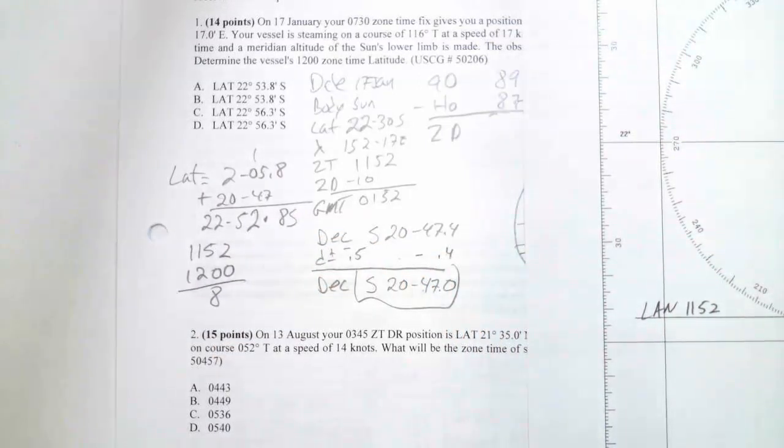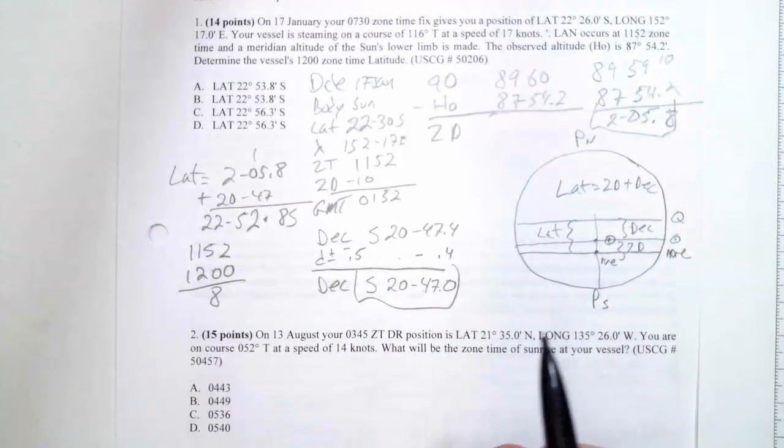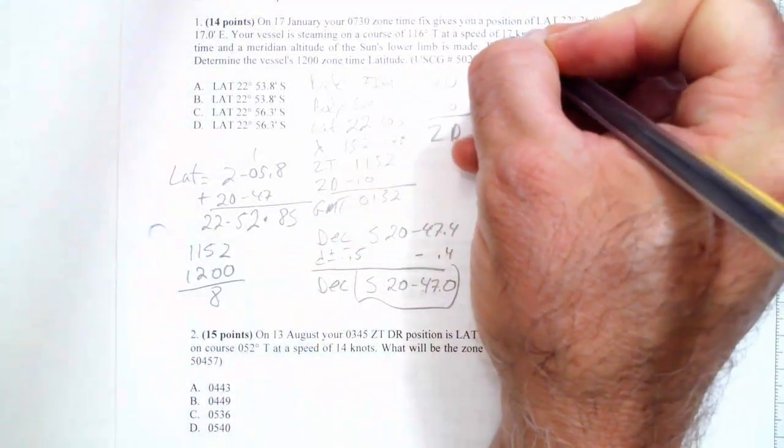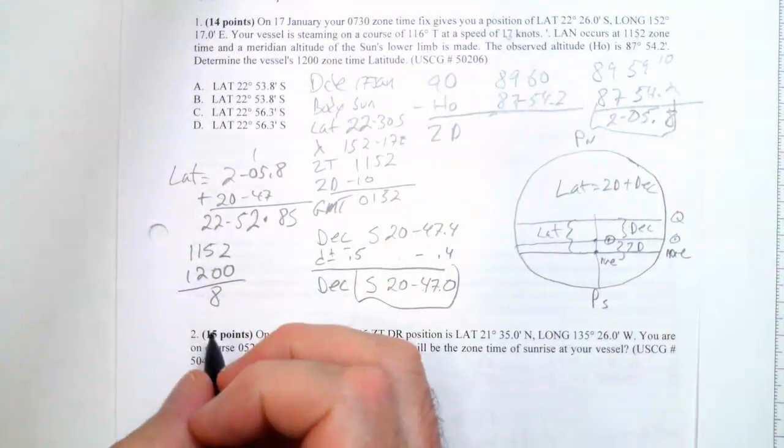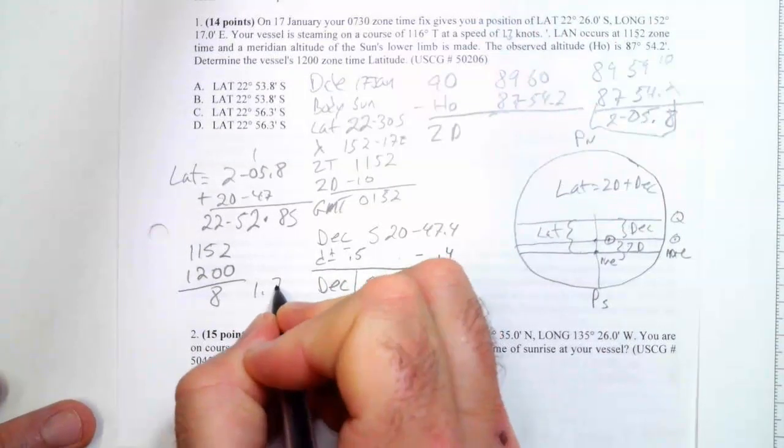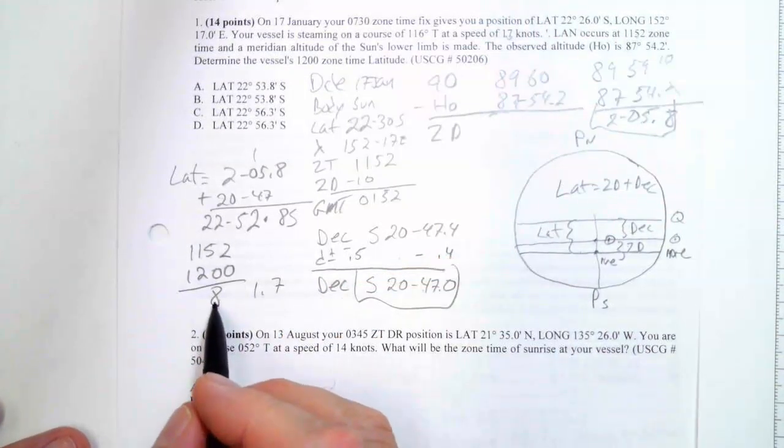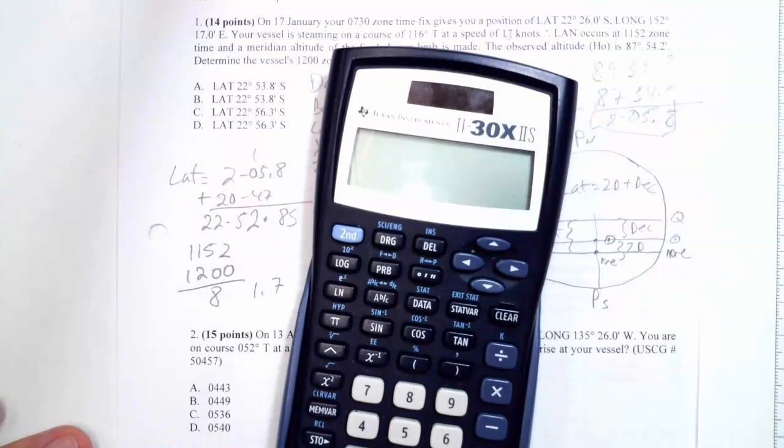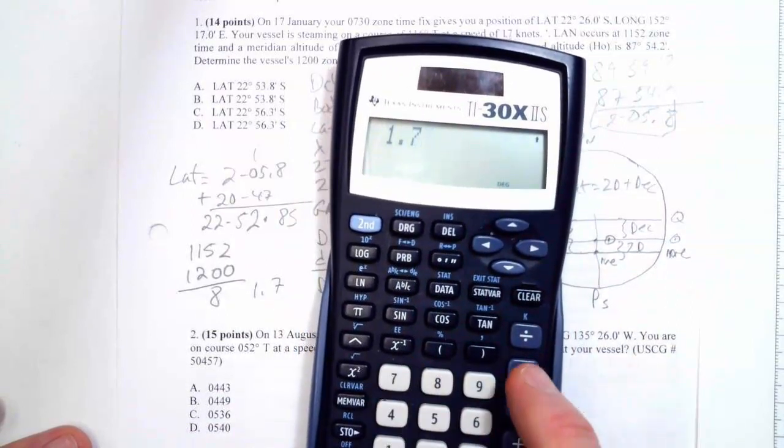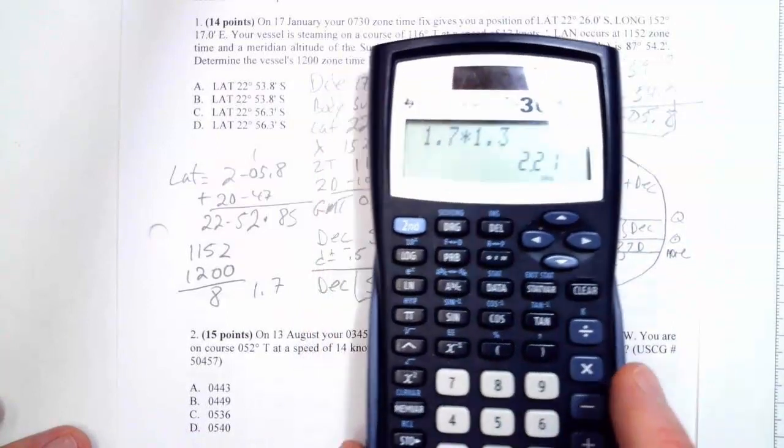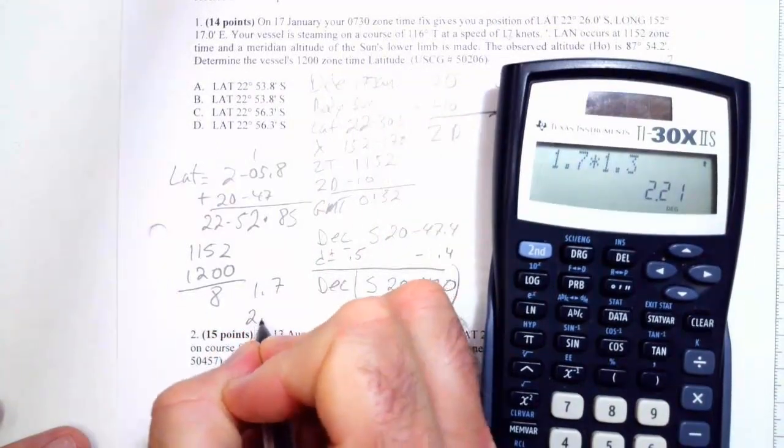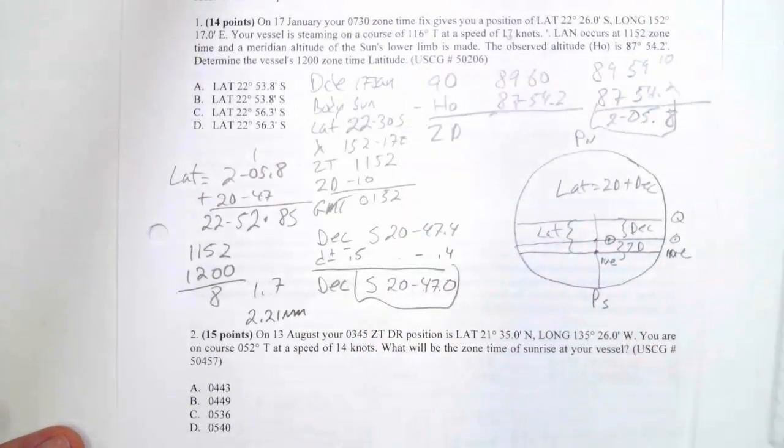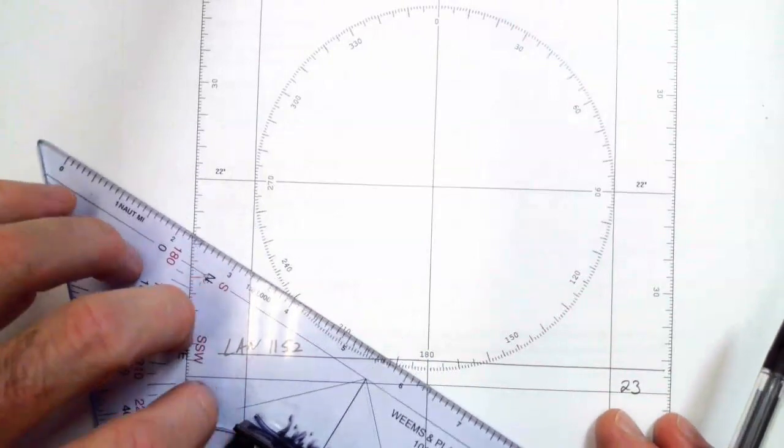So now I can just do this really quickly over here. 1.7 times 1.3. And it gives me 2.21 nautical miles. So I have to go 2.21 nautical miles. And what direction am I going? I'm going 2.1 nautical miles in 116. So now I take this over here. And I come back over here. And I get this lined up. And I can just choose any spot along here.